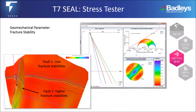Faults don't just leak across the plane. If they have reactivated since charge, then they may have transmitted fluid up-dip. This can be a positive migration mechanism, or conversely the failure of the trap.